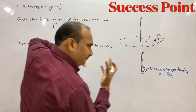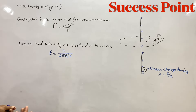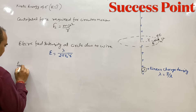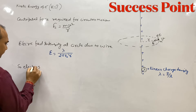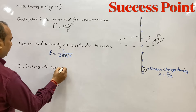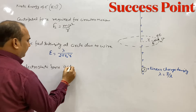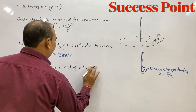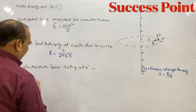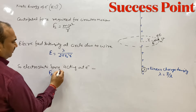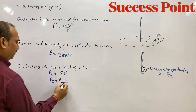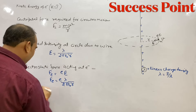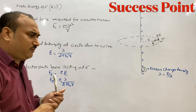पूरे circle पर हर जगह electric field का magnitude same रहेगा। So, electrostatic force acting on the electron: F_E = eE = eλ/(2πε₀r)। But this electrostatic force provides the centripetal force — इसलिए F_E = F_C होना चाहिए। अगर वो electron वहाँ घूम रहा है, तो ये दोनों बराबर होने चाहिए।